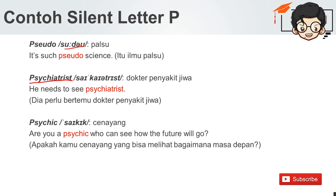Ini banyak sekali gabungan konsonannya, tapi cara membacanya adalah 'psychiatrist' — dokter penyakit jiwa. Di sini kita tidak perlu ucapkan P-nya. He needs to see a psychiatrist. Dia perlu bertemu dokter penyakit jiwa.